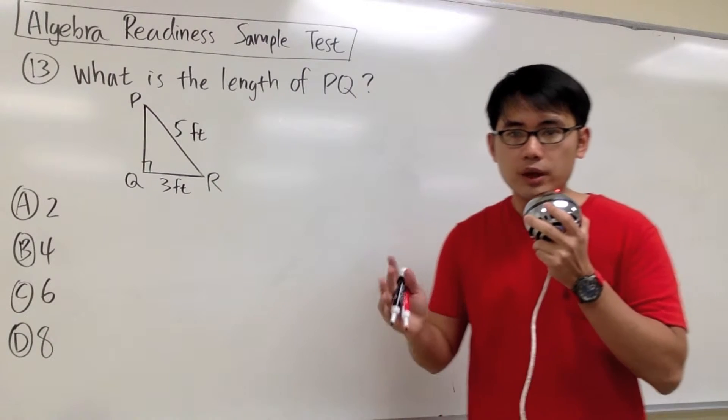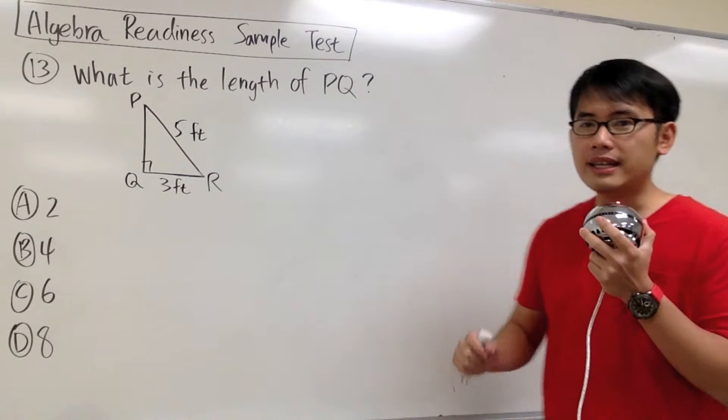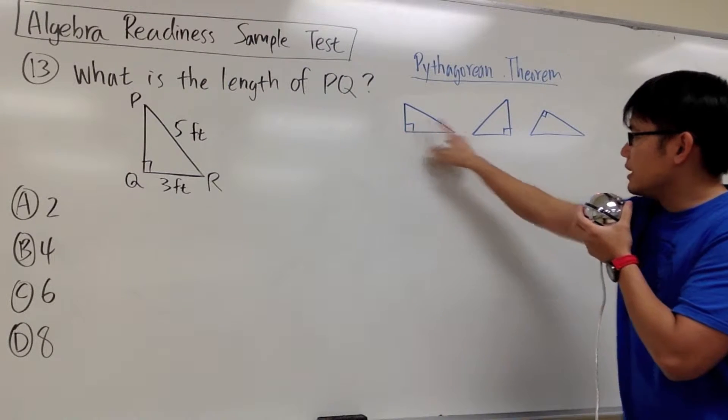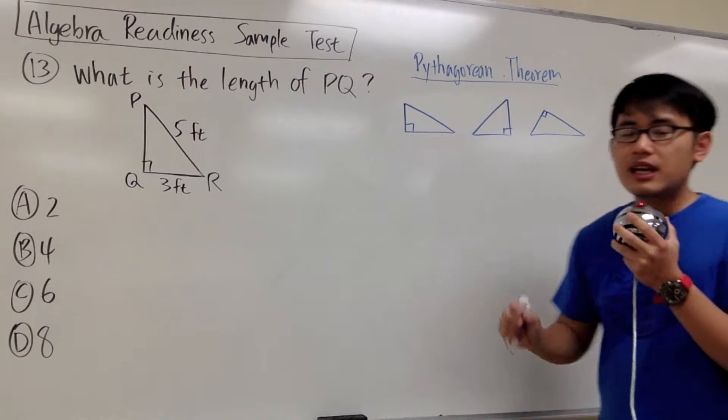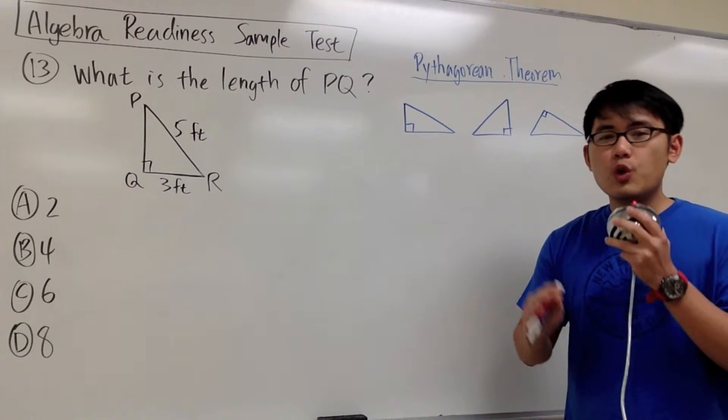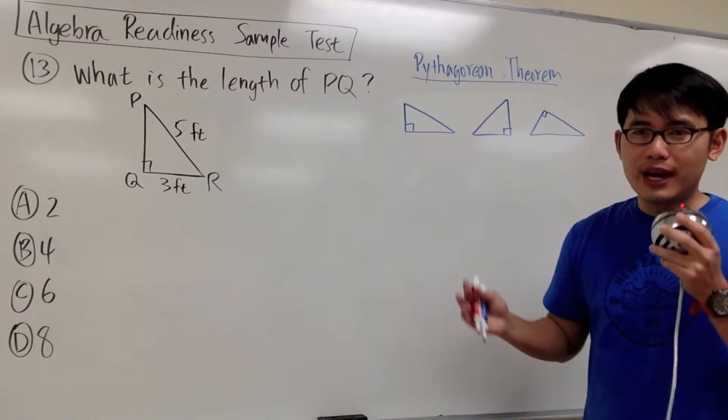As we can see, we are dealing with sides of a right triangle, therefore we have to use the Pythagorean theorem. Here we have three right triangles, and they are right triangles because they all have these little squares. The little square means that it is a 90 degree right angle. When a triangle has a 90 degree right angle, then it's called a right triangle.